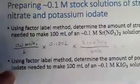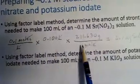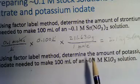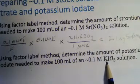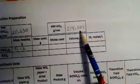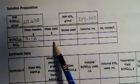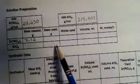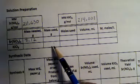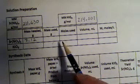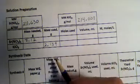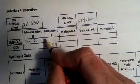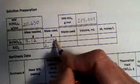For potassium iodate, you go through a very similar calculation, except you use the molar mass of potassium iodate instead of strontium nitrate. The molar mass of potassium iodate is right there, and that value goes into the calculation. That's the mass used in the lab. From the PowerPoint, for potassium iodate I believe the value shown is 2.139 grams, and for strontium nitrate it is 2.063 grams.